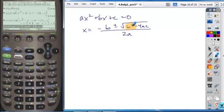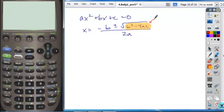This portion, the part that falls under the radical, is called the discriminant.